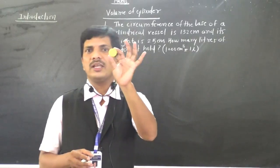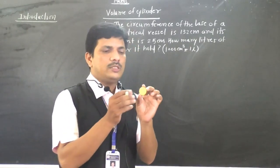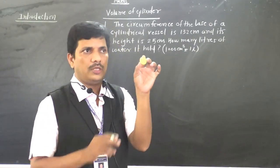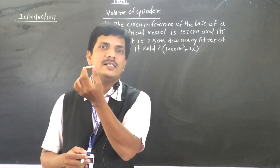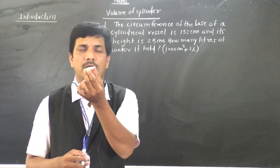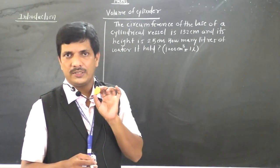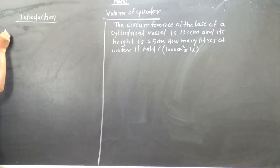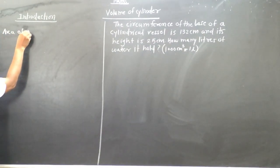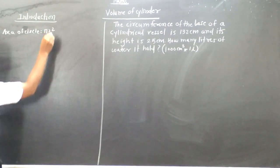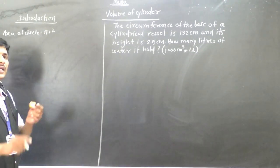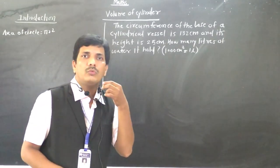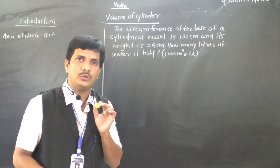So here I have a circular ring. If you see this circular ring, the area of this ring will be πr². Everybody knows the area of a circle is πr², because the thickness is negligible. So we don't consider the thickness here, and area we can directly write as πr².